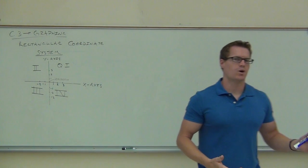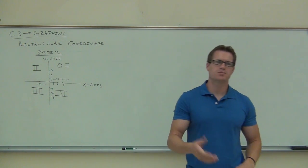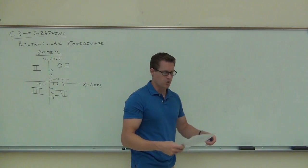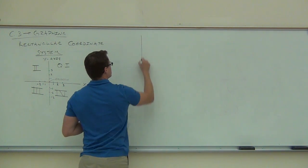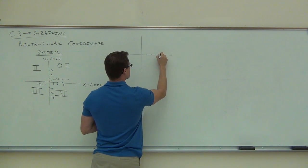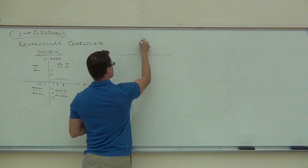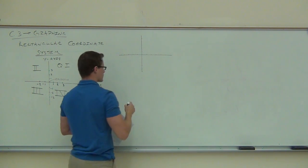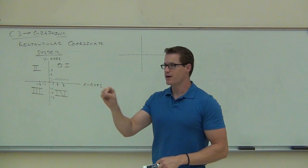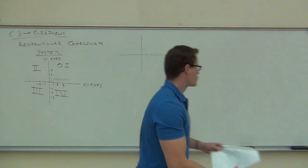Now that we've assigned values to both the X and Y axis, we can go ahead and plot some points. Draw a different XY axis on your paper right now — we're going to practice plotting some points. When we plot points, they are usually given by a capital letter. We put a little dot and then the capital letter that signifies our point. Let's try 3, 5.